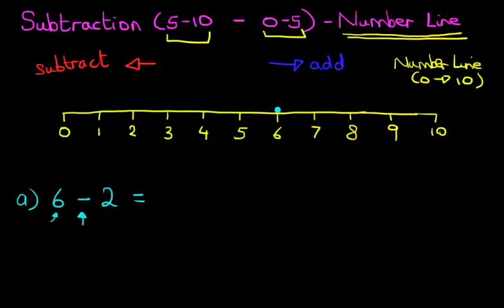Now, how many jumps do we take to the left? Have a look at the question. It says 6 minus 2. So we have to take 2 jumps to the left. Now, watch closely. That's the first jump. 1 and 2. So that was the first jump. And there's the second jump. Which number have we landed on? It is number 4. And that is our answer. 6 minus 2 equals 4.